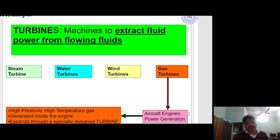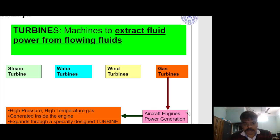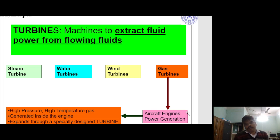A turbine is a machine which extracts fluid power from flowing fluids. If the fluid is steam, then it is a steam turbine; if water, a water turbine; if wind, a wind turbine; and if gas is the fluid, then a gas turbine. The gas turbine is used in aircraft engines and power generation, and it is based on the Brayton cycle.